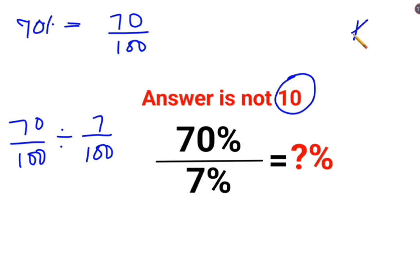Now whenever we have division involved, we will follow the acronym of KCF, where K stands for keeping the first fraction or the number as it is. C stands for changing the division sign to multiplication. F stands for flipping or taking reciprocal of 7 upon 100 which is 100 upon 7.